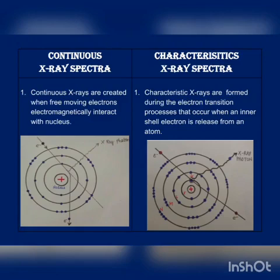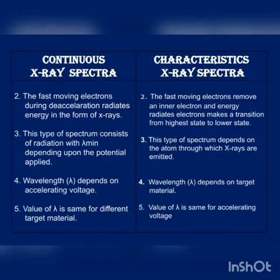Second comparison point: for continuous X-ray spectra, fast-moving electrons during deceleration radiate energy in the form of X-rays. For characteristic X-ray spectra, fast-moving electrons remove an inner electron, and the radiating electron makes a transition from a higher energy state to a lower energy state.